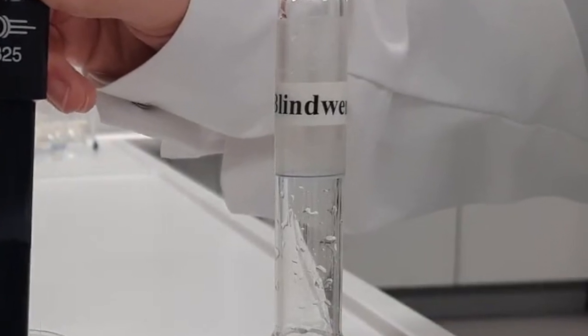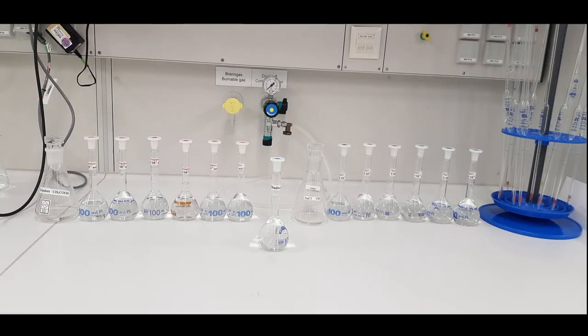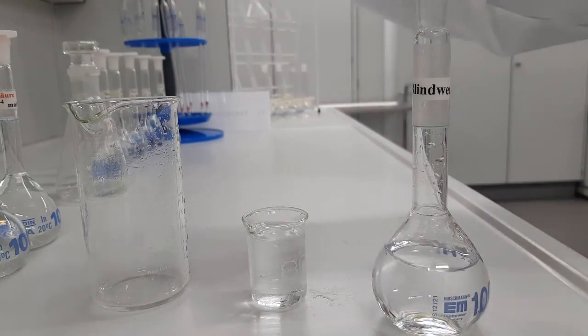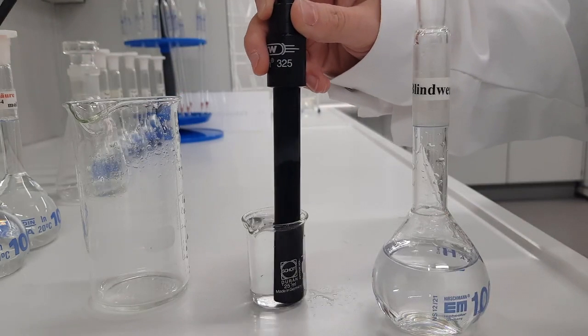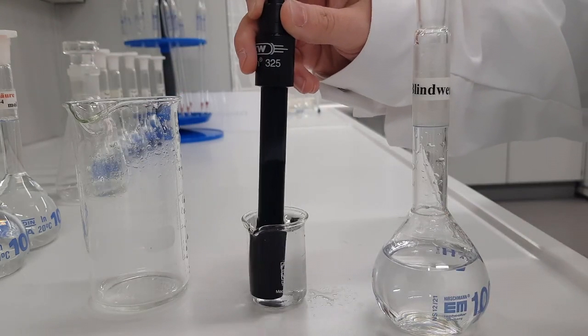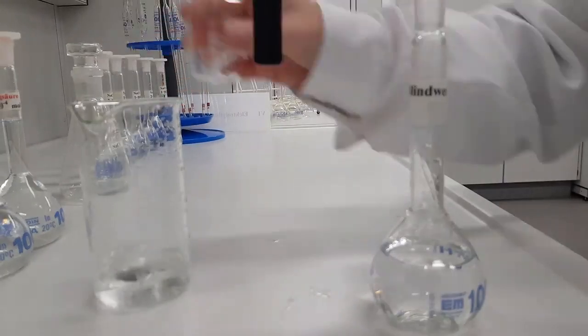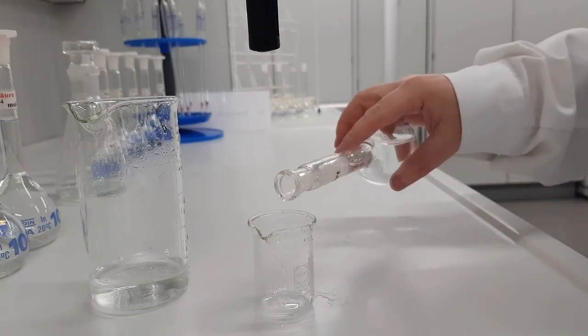When doing the measurement with a conductometer, its electrode first has to be rinsed with the sample to be measured. Fill the solution to be measured into a small beaker, immerse the electrode into the solution, give it a brief stir and discard the sample. Fill up the beaker again and now do the actual measurement.